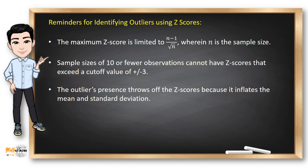Also, remember that outliers' presence throws off the z-scores because it inflates the mean and the standard deviation. So, if you are using the sample mean and you got it from a dataset having an outlier, it could throw off the z-scores of each dataset. And if that's the case, we need to use other methods for identifying outliers.